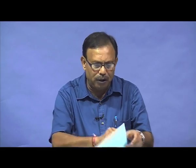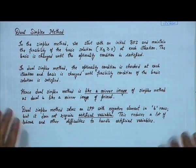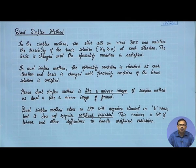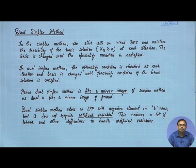We will start with the dual simplex method. In the simplex method, we start with an initial basic feasible solution and maintain the feasibility of the basic solution — that is, xb greater than or equal to 0 — at each iteration. We start with a feasible basic solution, and the basis is changed until the optimality condition is satisfied.